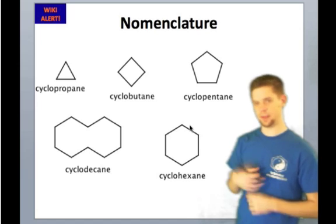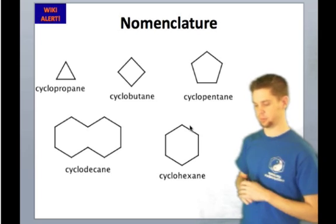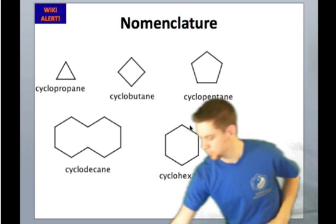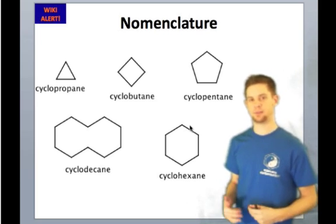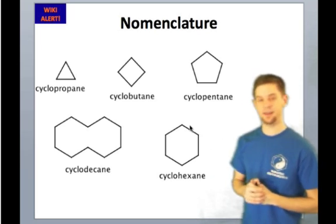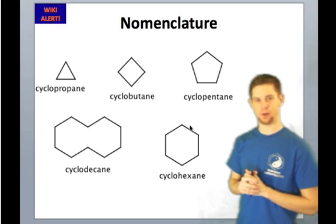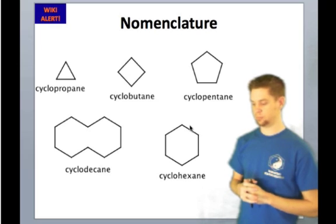To name the cyclic hydrocarbons, we simply prefix the open-chain alkane with the word 'cyclo.' Cyclohexane happens to be a cycloalkane we'll deal with quite a bit. We represent that it's cyclic by using the cyclo prefix.